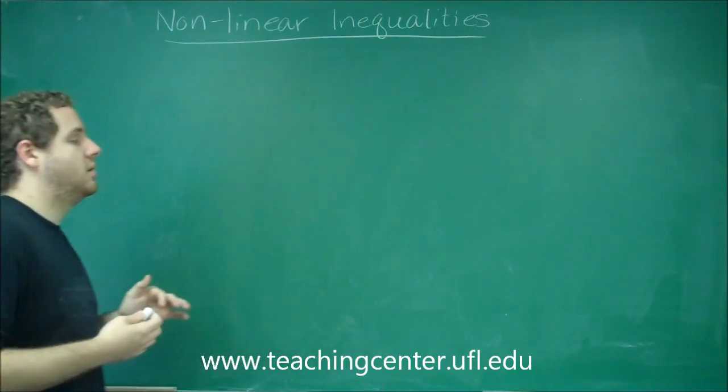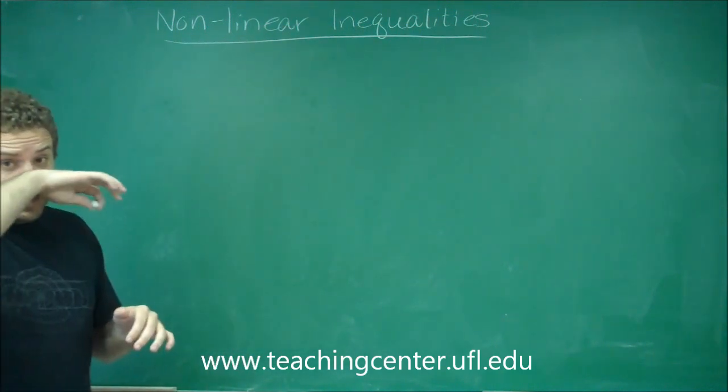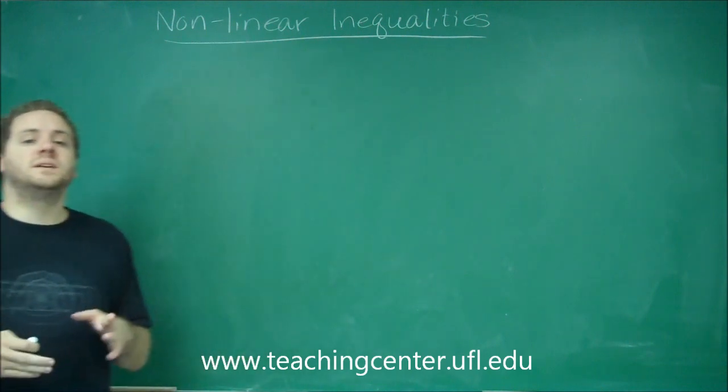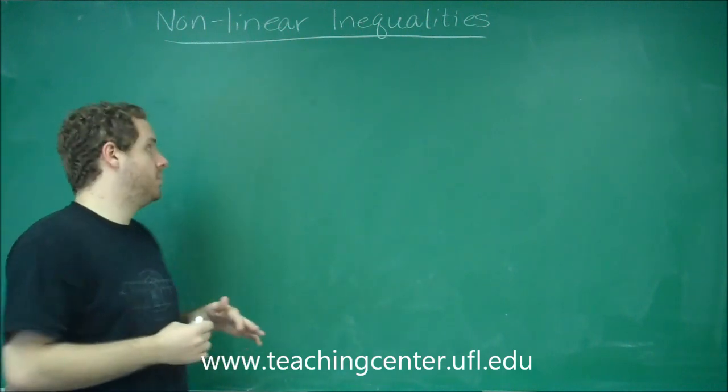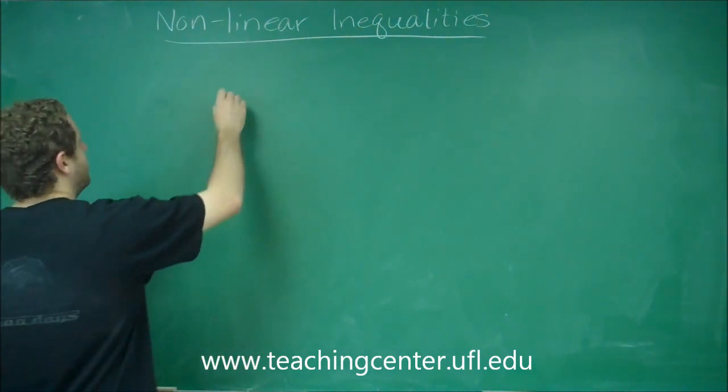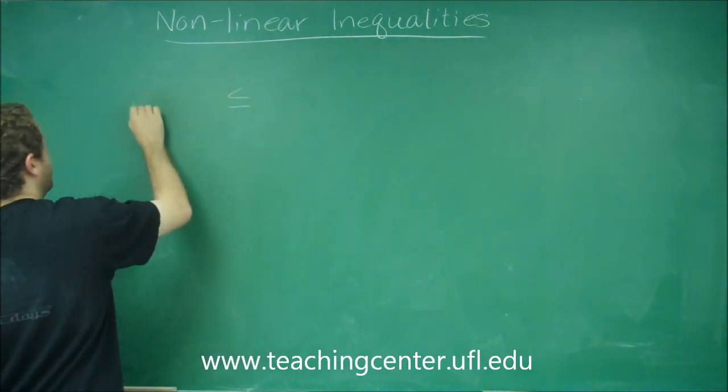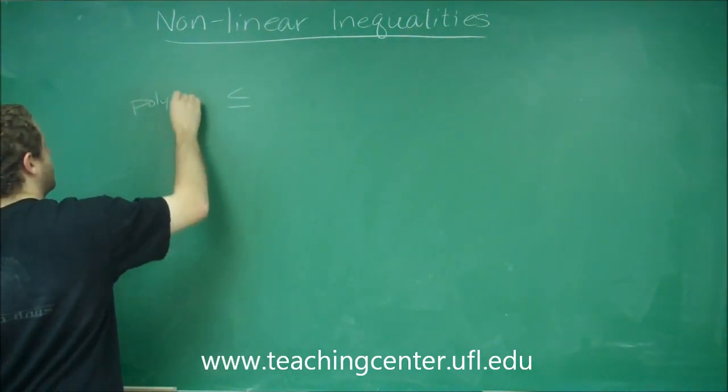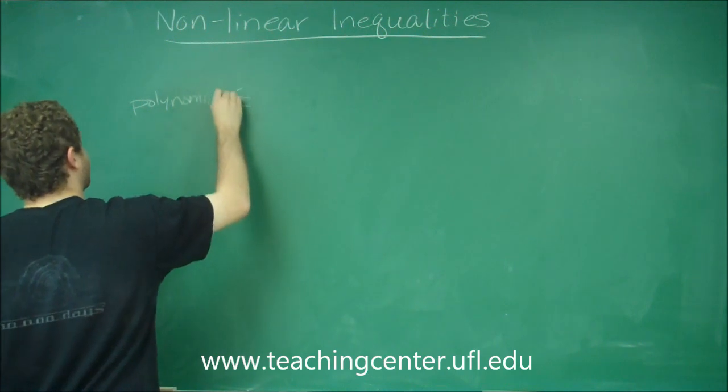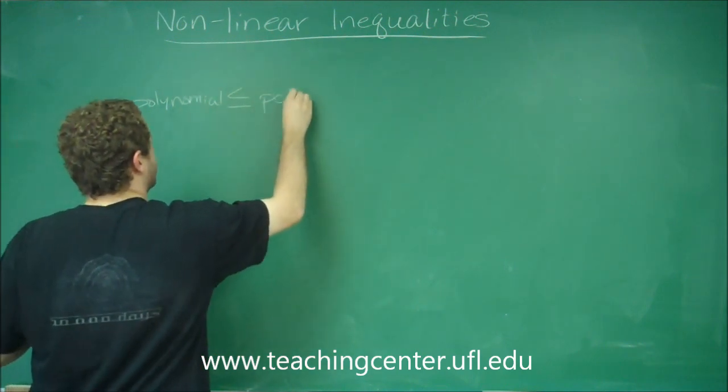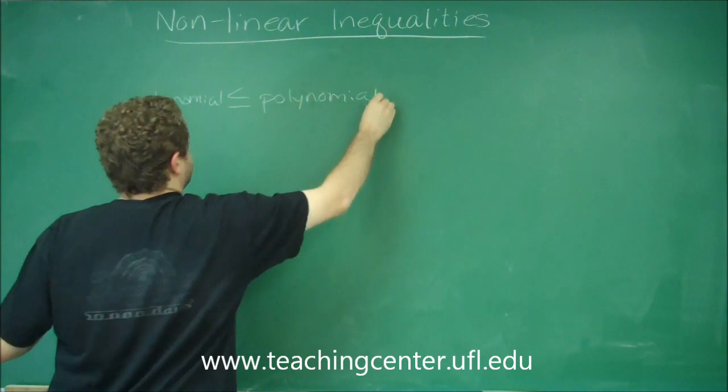So the main process for solving a non-linear inequality is always get one side of it to be zero. Even if you have some polynomial over here and some polynomial over here, for example,